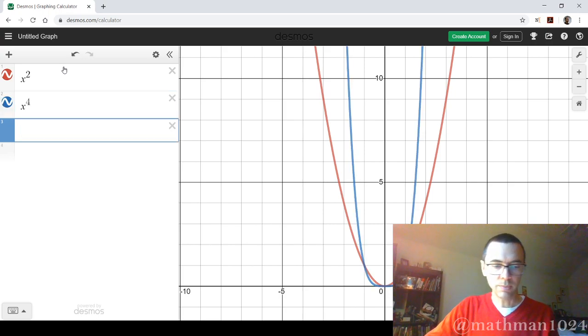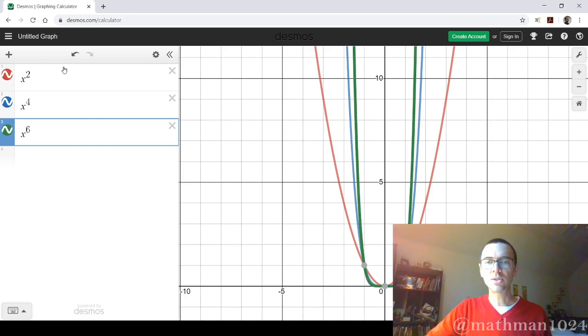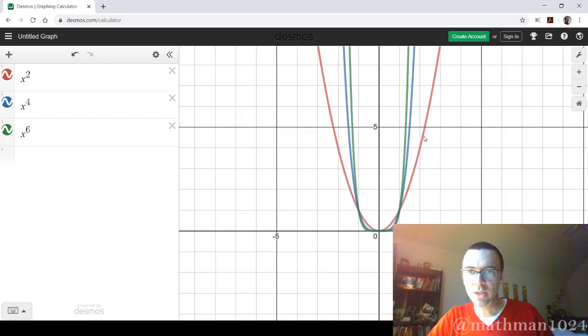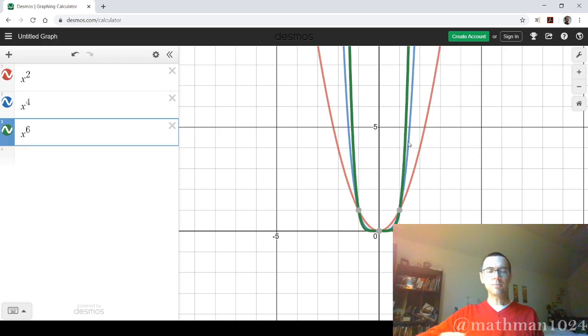And if I were to do x to the sixth, these guys are all kind of u-shaped in nature. But you see that here, the red for x squared, then x to the fourth and x to the sixth. So the higher the power is, the steeper these guys get on the ends.